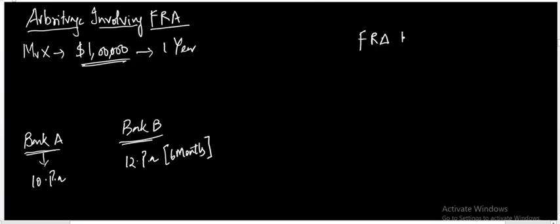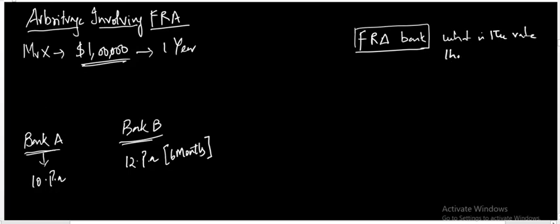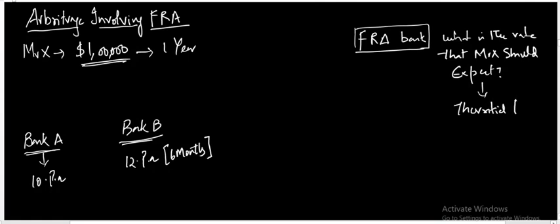The FRA bank asks at what rate will you enter into the contract. It says: go deposit into Bank B, you will get 1,06,000 from Bank B, then deposit with the FRA bank. What rate should Mr. X expect? This is a 6 into 12 FRA — time period 0, then 6 months, then 12 months.